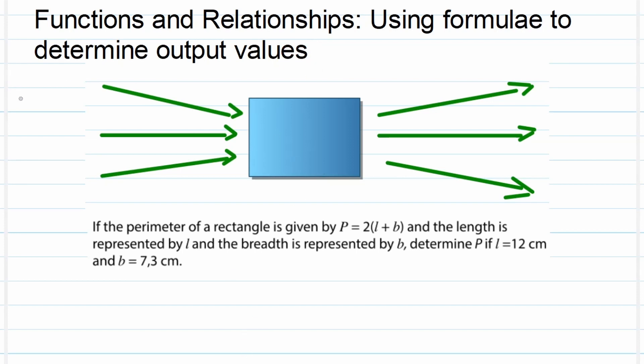So just a quick recap again from our flow diagram. We have our input values and we have our output values. And how do we go from input to output is by using a rule. Now just for your sake and your understanding, another word for rule is formula.